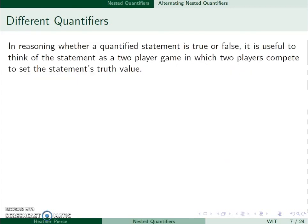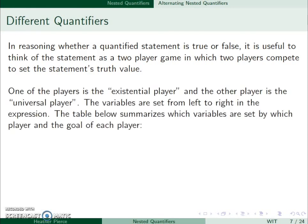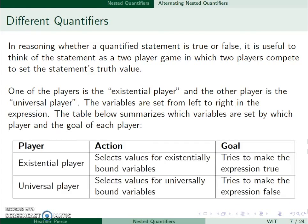In determining if something is true or false, it's useful to think of this as a game. We'll have two players compete to set the statement's truth value. One player will be the existential player. The other player is the universal player. The variables are set from left to right in the expression. The existential player wants to select values for existentially bound variables. Universal player wants to select variables for universally bound variables. The existential player tries to make the expression true, whereas the universal player tries to make the expression false.